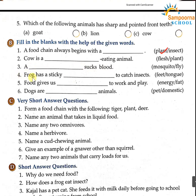Number 4: frog has a sticky feet or tongue? Tongue. Very good — tongue. Number 5: food gives us dash to work and play — energy to work and play. Number 6: dogs are dash animals — dogs are pet animals.